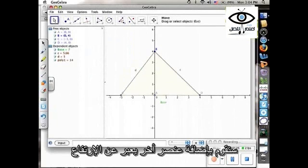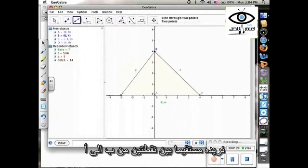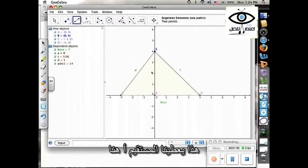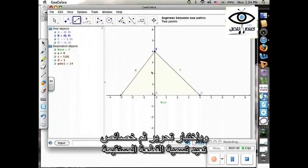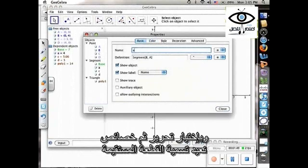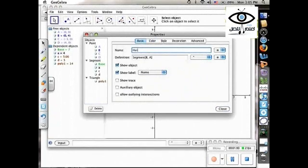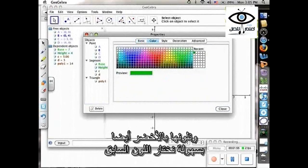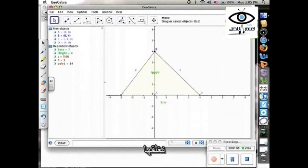And then let's add a segment to be our height. So we want a segment between two points. Go from point B to point A. And so that gives us segment A here. It tells us it's segment A. So let's edit the properties of that. We'll rename that one our height. And let's make that one green as well. And I can use the recent color there. And I'll move that label over.